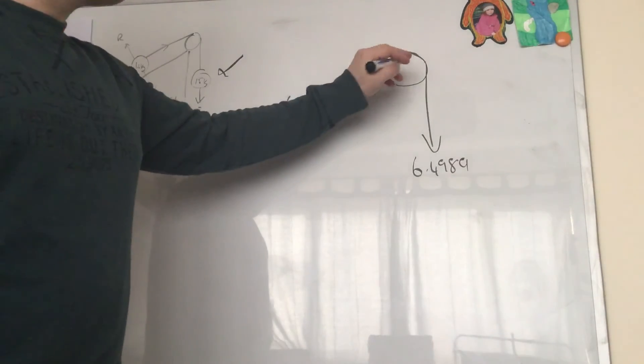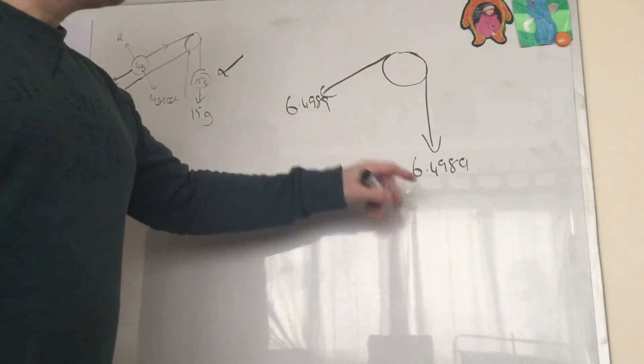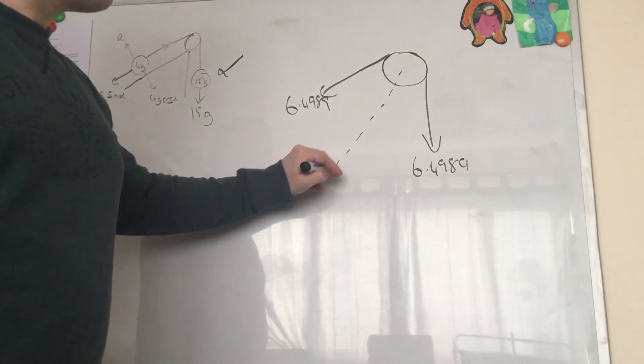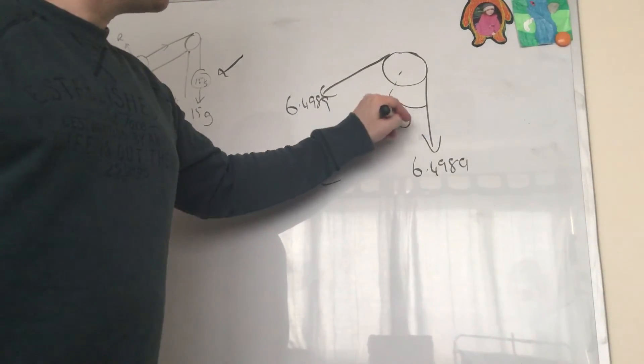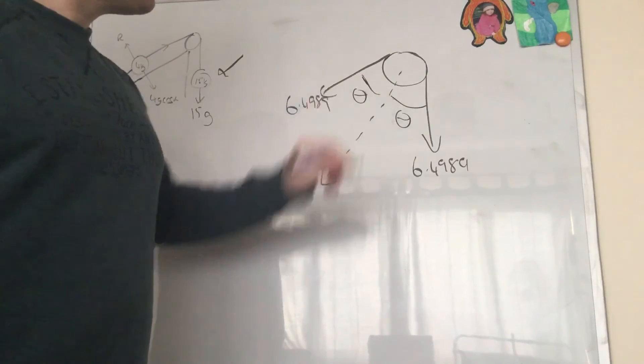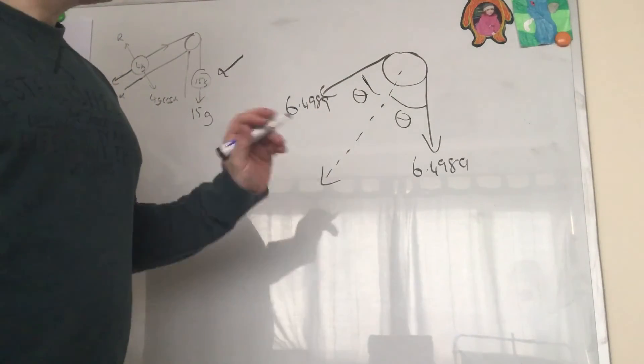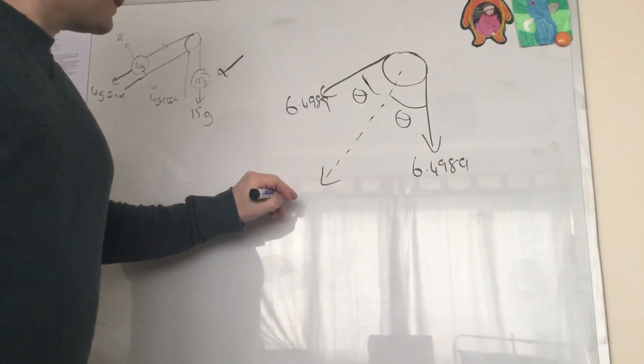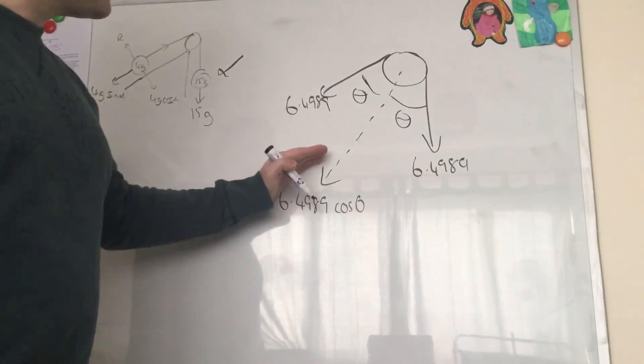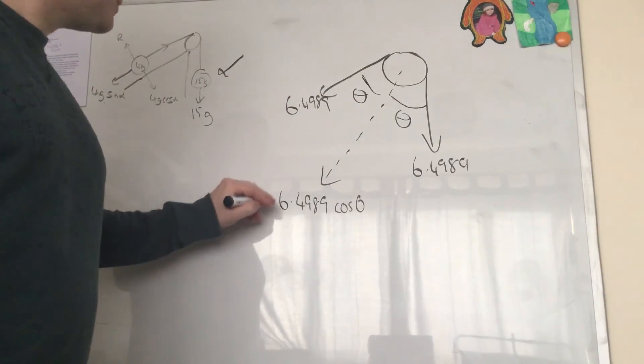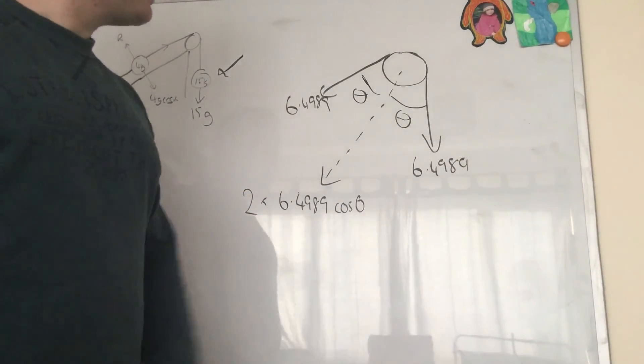Now, resultant force, because they're equal, the resultant force is going to be exactly halfway between them. So that's what we need to work out. I'm going to call this angle theta and this angle theta. And if we resolve that, we're going to get 6.4989 cos theta. And if we resolve this one, we're going to get the same again, so it'll be 2 times 6.4989 cos theta.